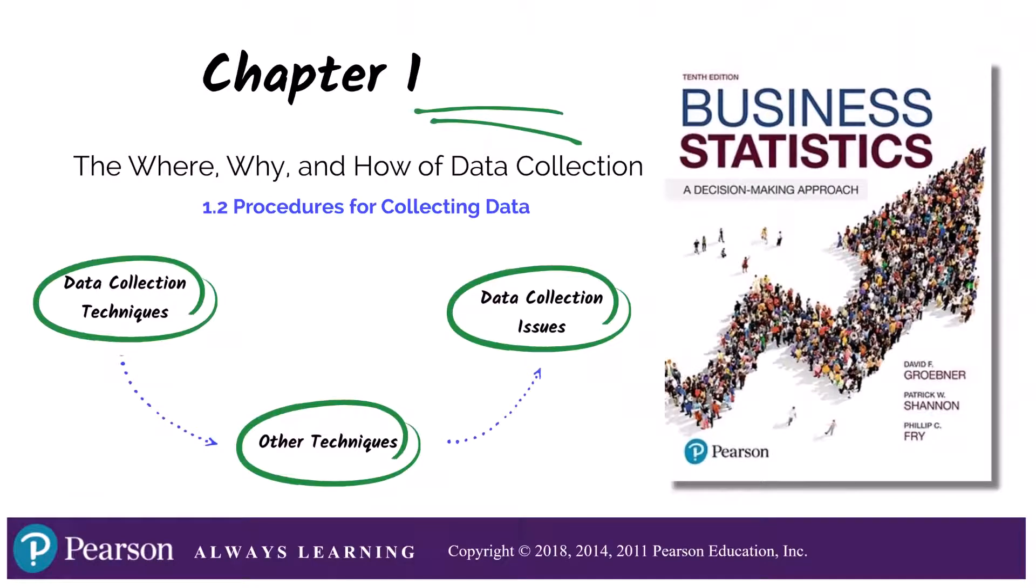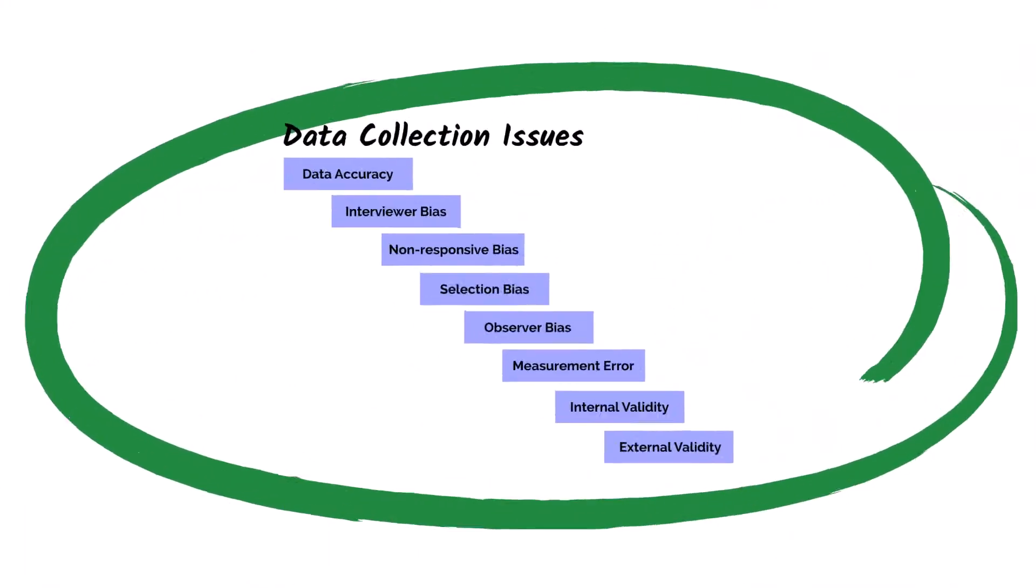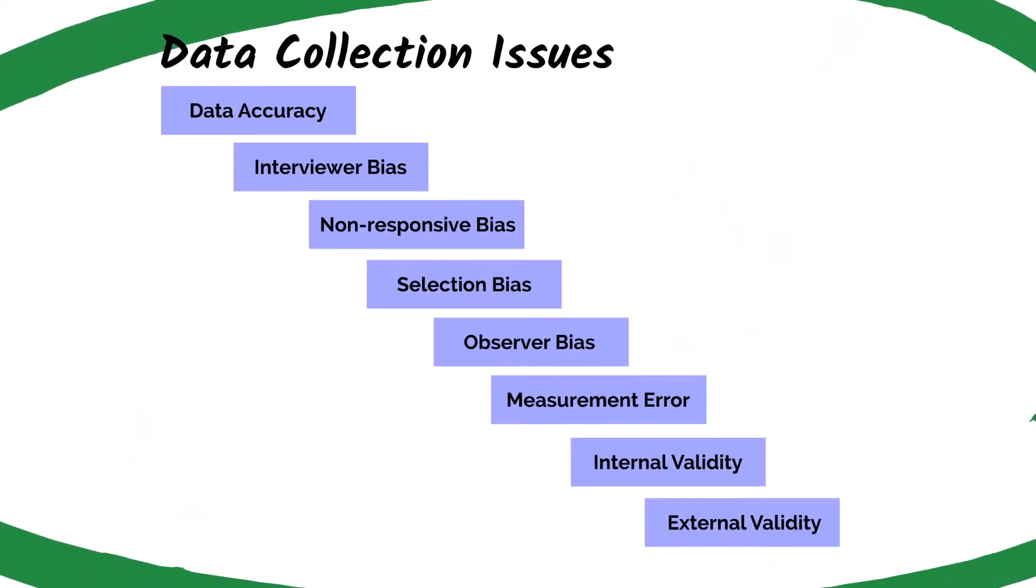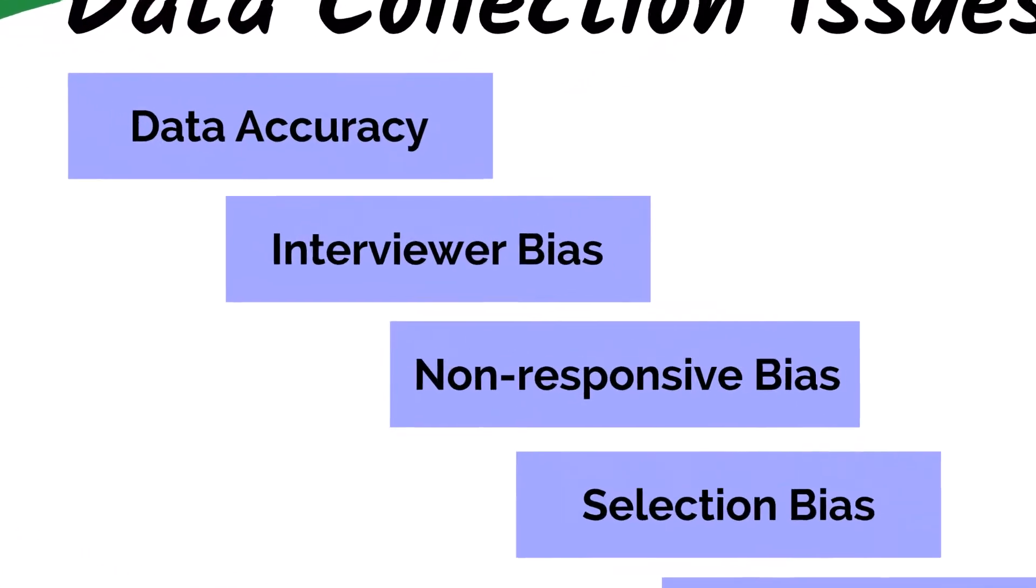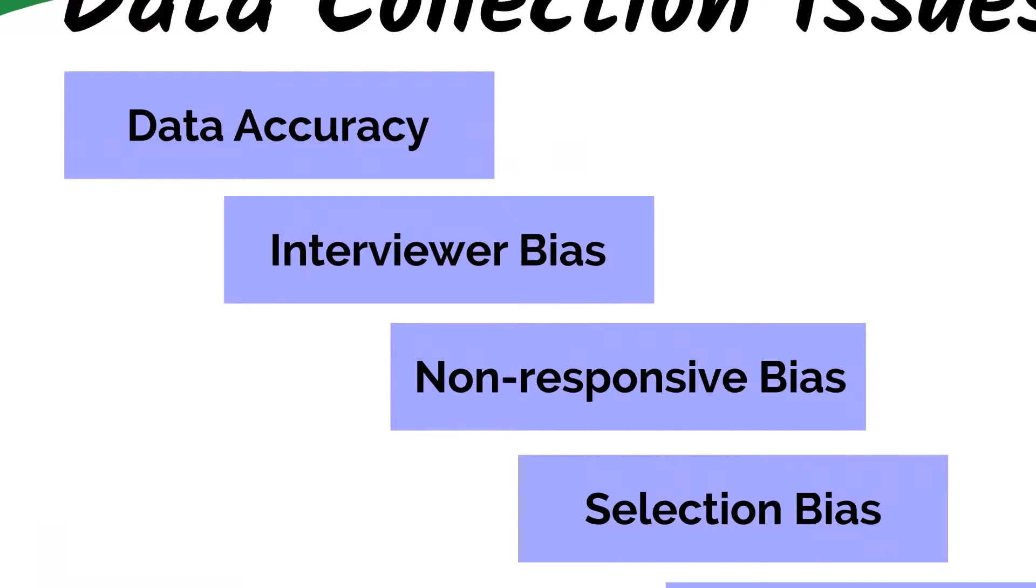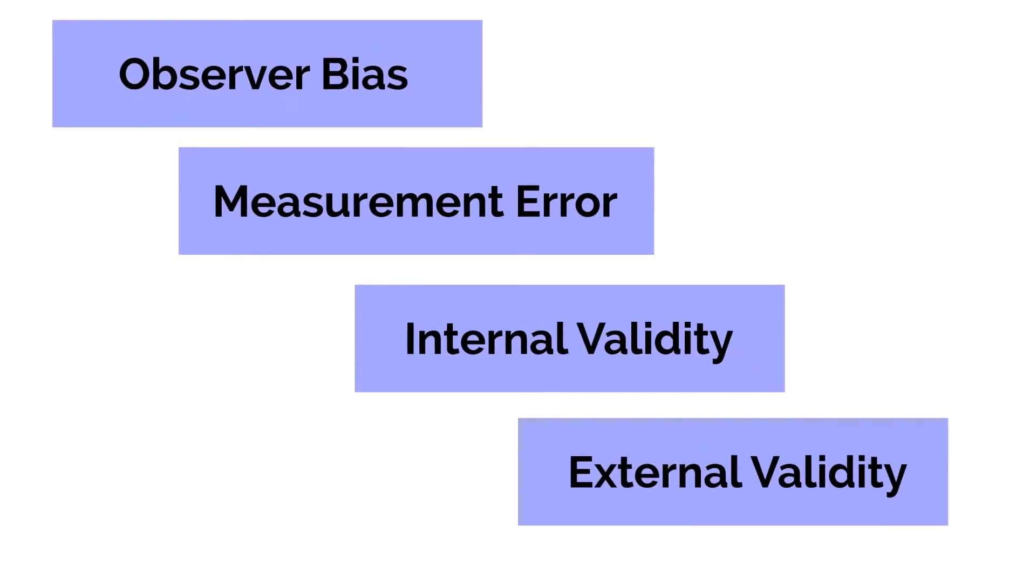Now, let's dive into some of the data collection issues that you might encounter. As you read chapter one, make sure you pay close attention to all of these data collection issues. We may encounter issues whenever we're collecting data, whether it's data accuracy and how good is the data that is coming in. Is there interviewer bias towards a particular outcome or position? Non-responsive bias is just when participants don't respond because they don't want to or they're not interested. Selection bias is where we may be selecting a certain type of participant and they only give us a narrow view of information. As mentioned, observer bias is when observations might be biased towards the opinion of the observer. Then, measurement error is where we may be collecting data using measurement tools and there may be an issue with the tool itself.